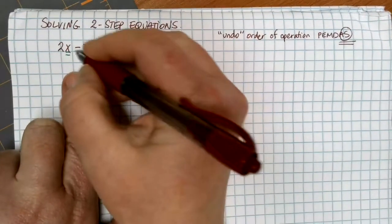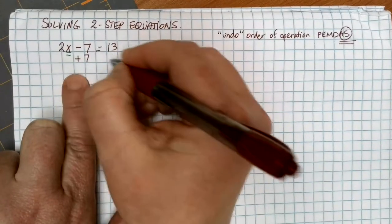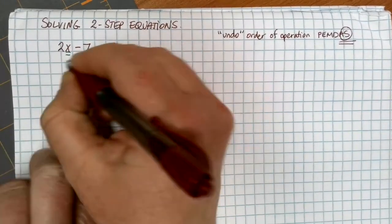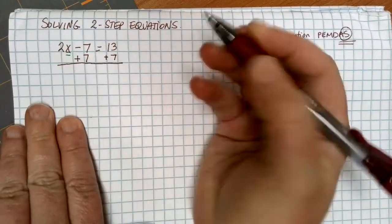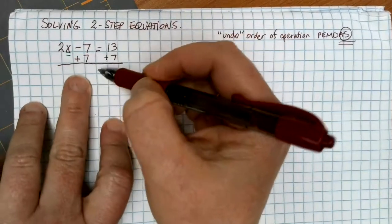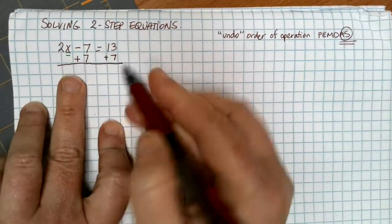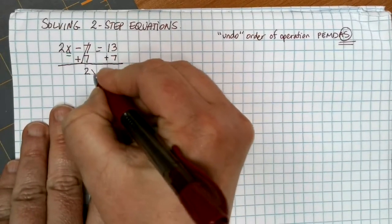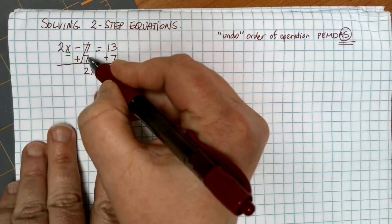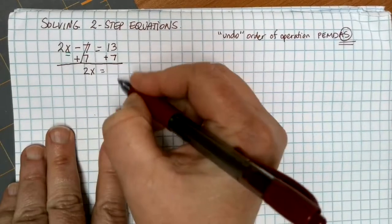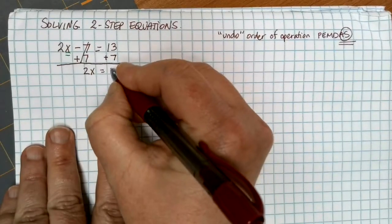To get rid of a minus 7, we're going to do the opposite. Instead of subtracting 7, we're going to add 7 to each side. Again, as we're going through these, it's critical for you to get credit to make sure you show me what are you doing to each side of the equation, and what does that leave you with. In this case, the minus 7 and plus 7 go away, leaving me with just the 2x, and on the right side, I have 13 plus 7, which is 20.